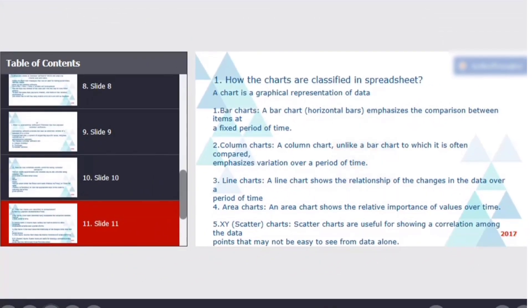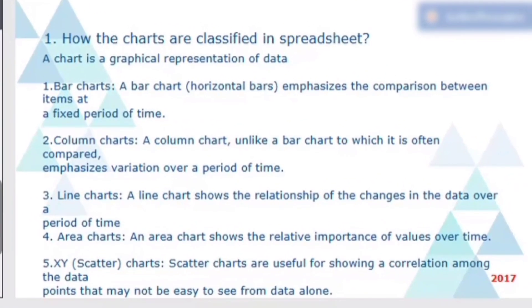Now, the 11th question is how the charts are classified in a spreadsheet? A chart is a graphical representation of data. There are several charts, say as bar chart, column chart, line chart and area charts, XY scatter chart, etc. Bar chart emphasizes the comparison between the items at a fixed period of time. Column chart, unlike a bar chart, compared emphasizes variations over a period of time. Line chart shows the relationship of changes in data over a period of time. Area chart shows the relative importance of values over a time. And XY scatter chart, scatter charts are useful for showing a correlation among the data points that may not be easy to see from the data alone. This question was asked in 2017.